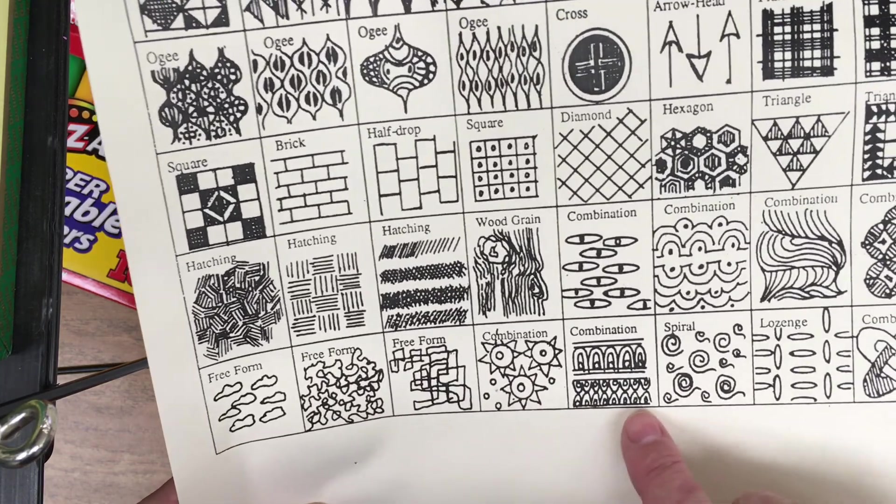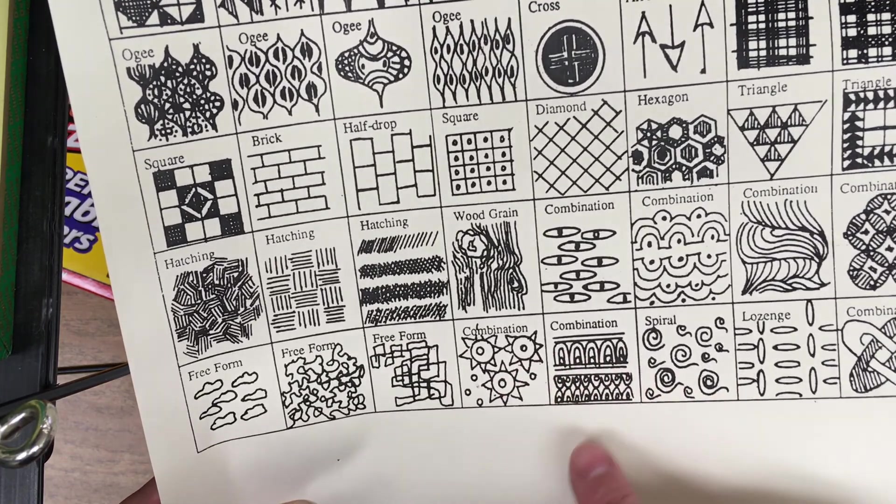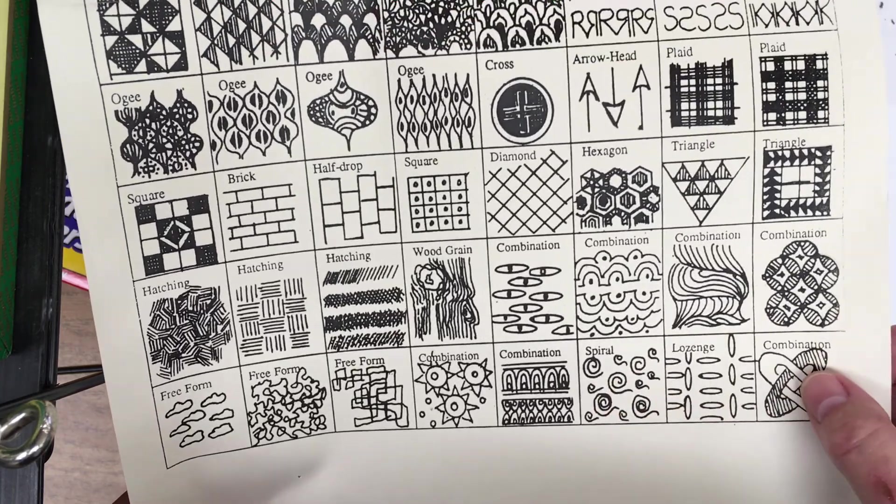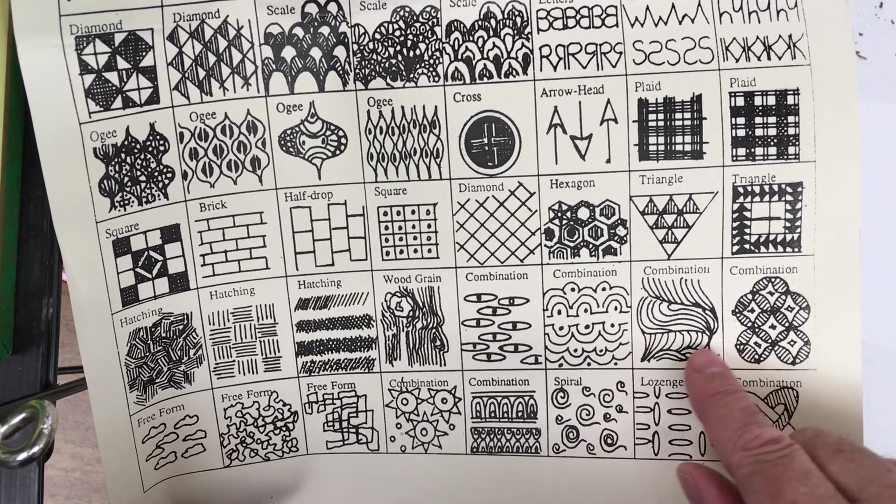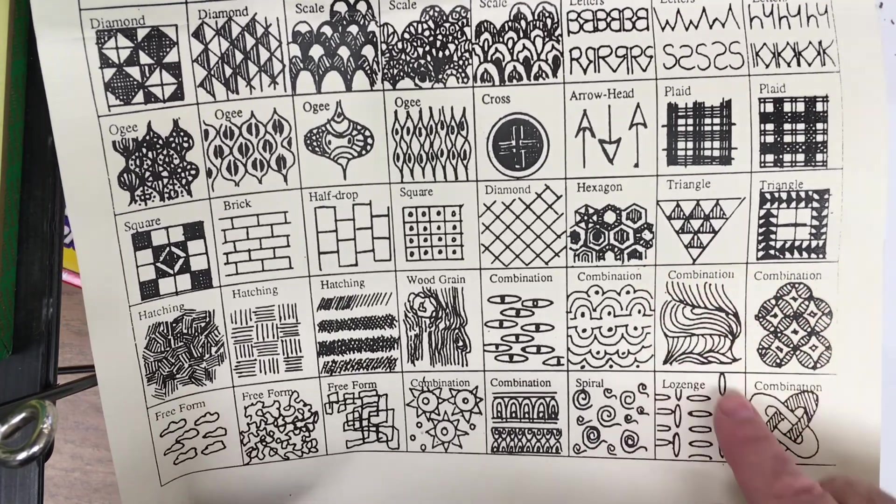Here's a combination of all different kinds of line patterns. So these are things that you're going to think about and how you're going to do them. Here's another combination here. More freeform.